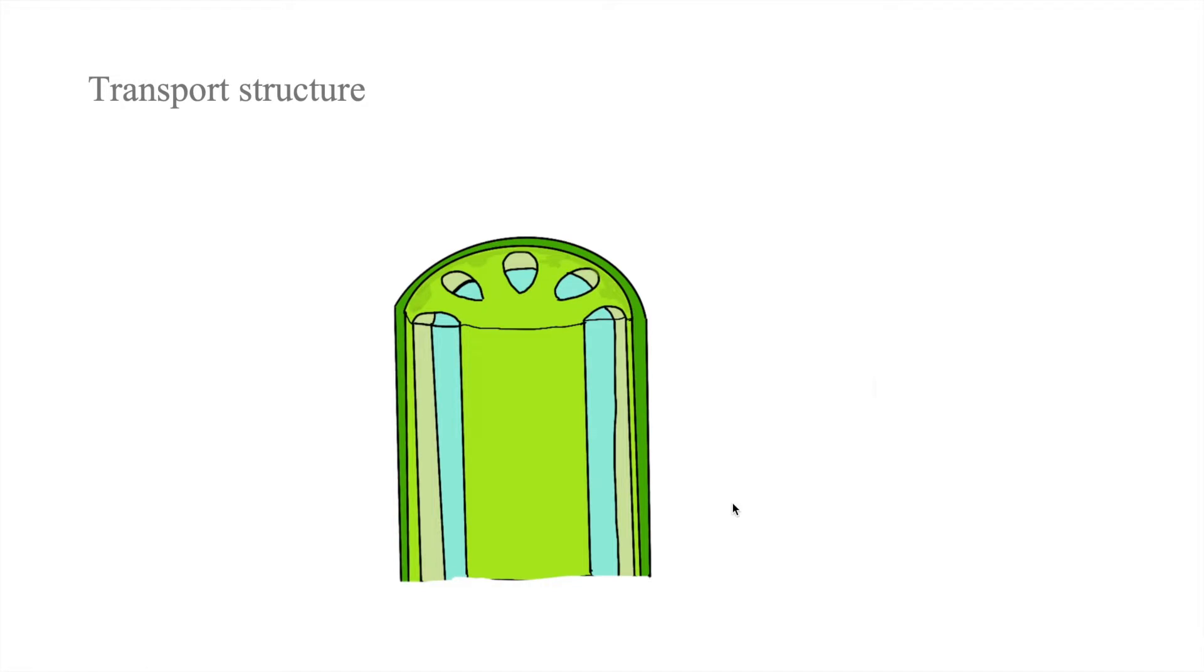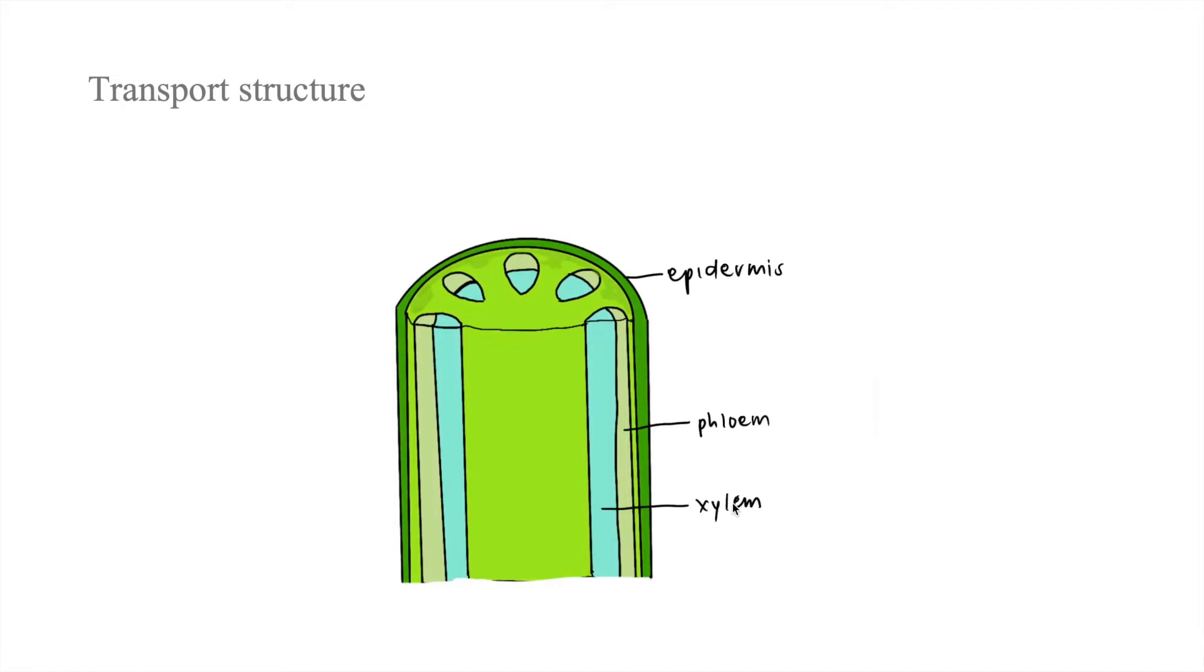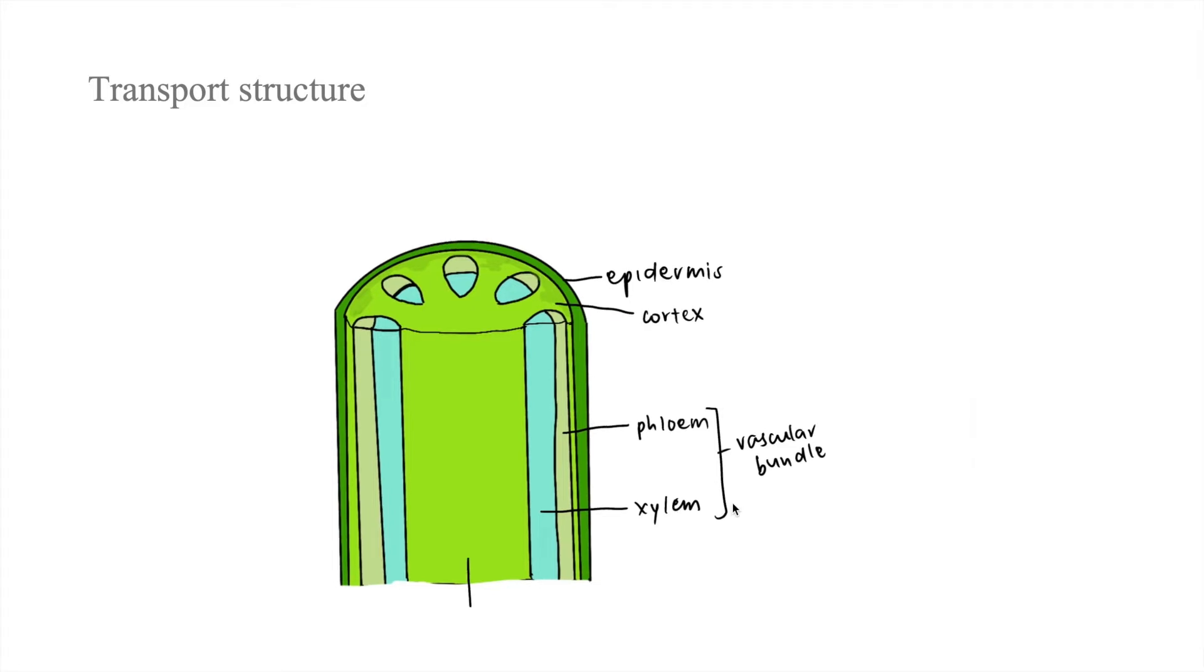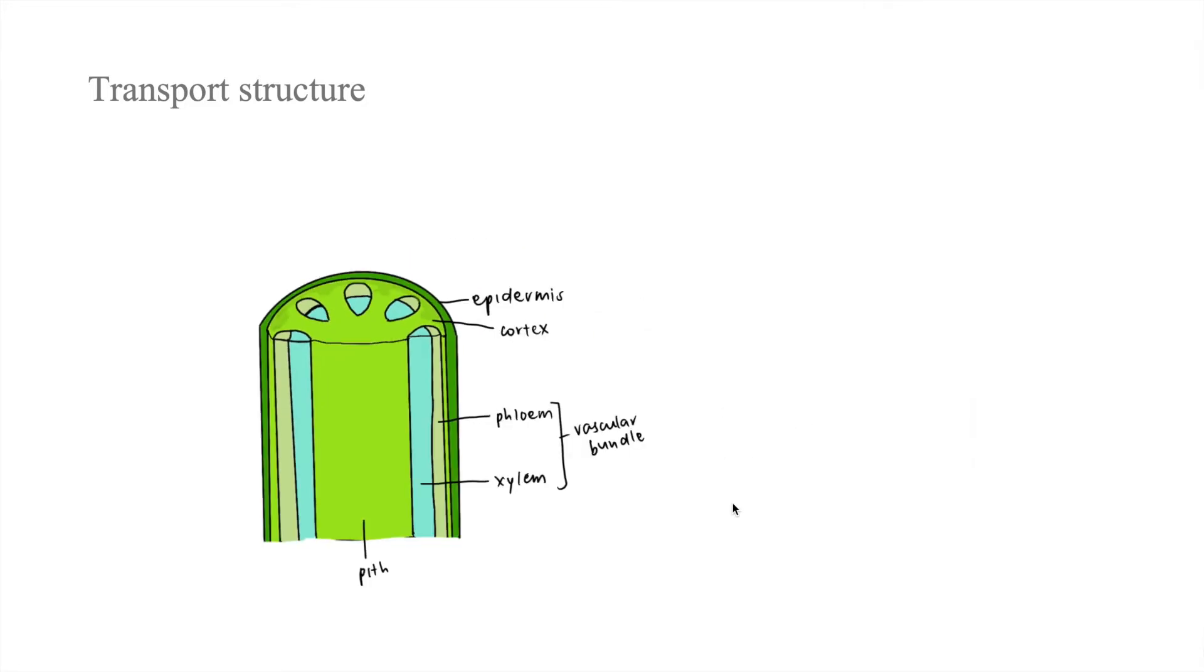The stem is covered by the epidermis and the phloem and xylem are grouped together to form the vascular bundle. Let's zoom in to the vascular bundle.